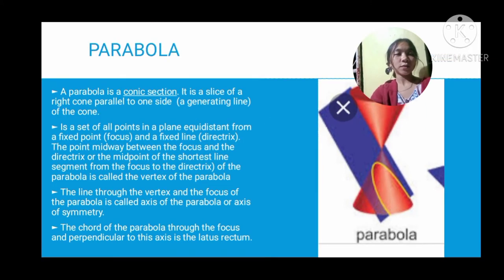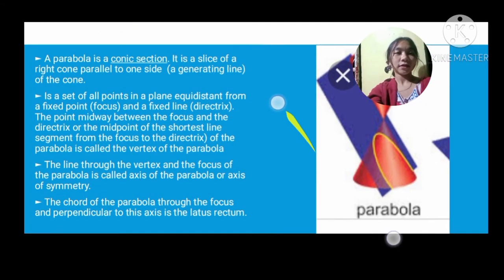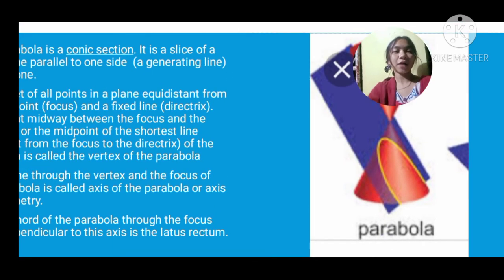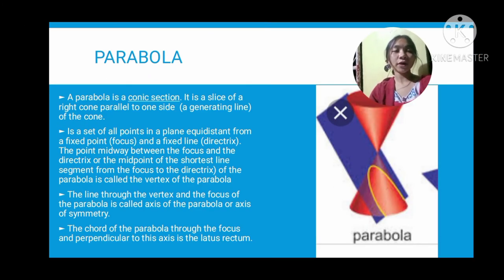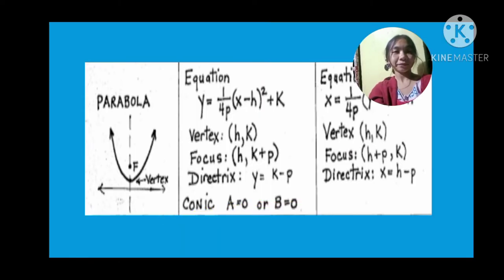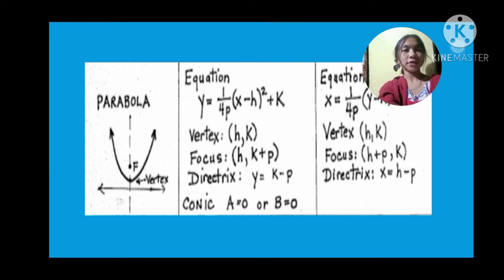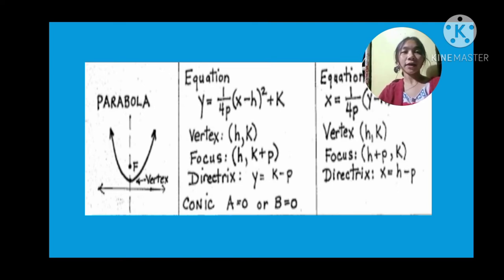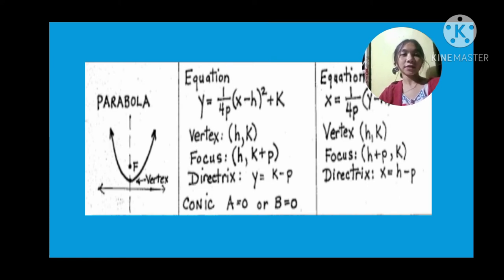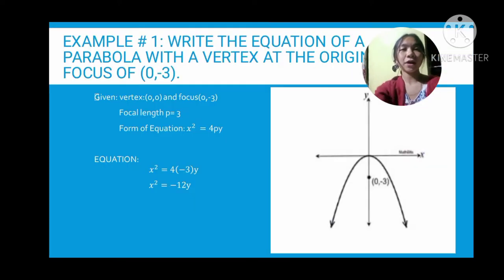Here is an example using the equation for solving the parabola. We have y equals 1 over 4p times (x minus h) squared plus k. The vertex is at (h, k), the focus is at (h, k plus p), and the directrix follows accordingly. This is the standard form for the parabola.